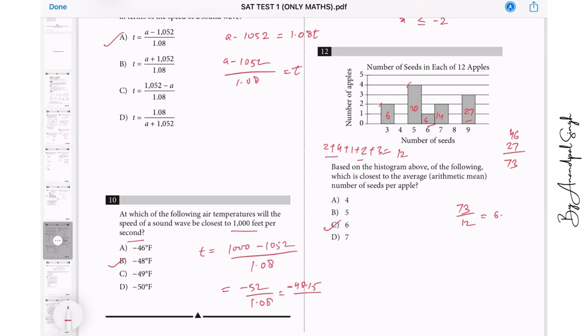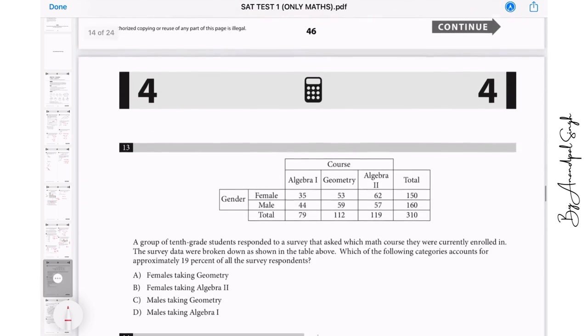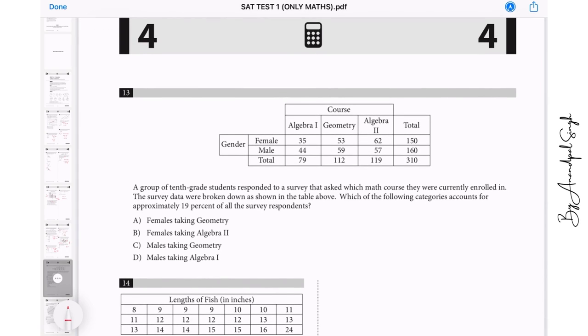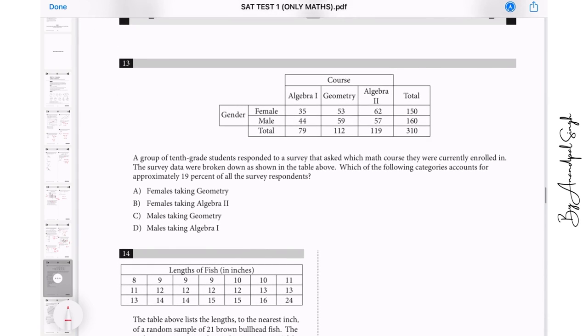So dividing this by 12, it will be near to 6 point something, so the answer will be 6. We need to find the closest, so closest is 6.